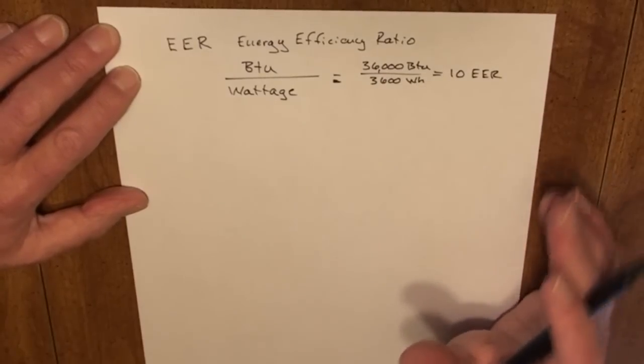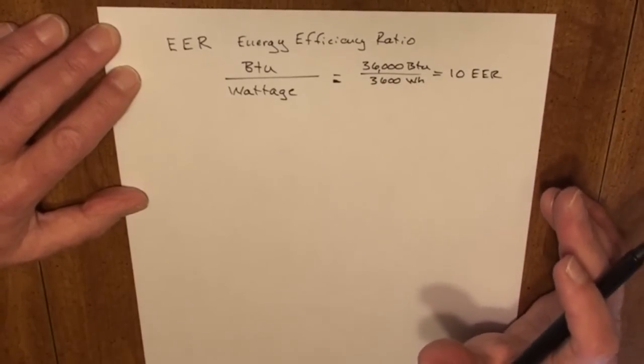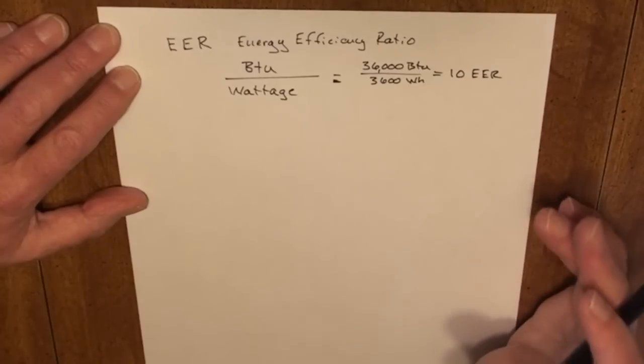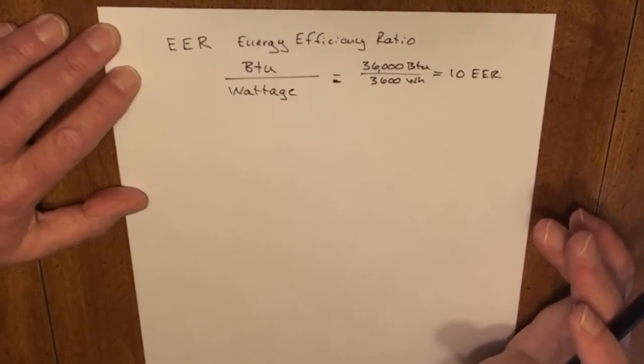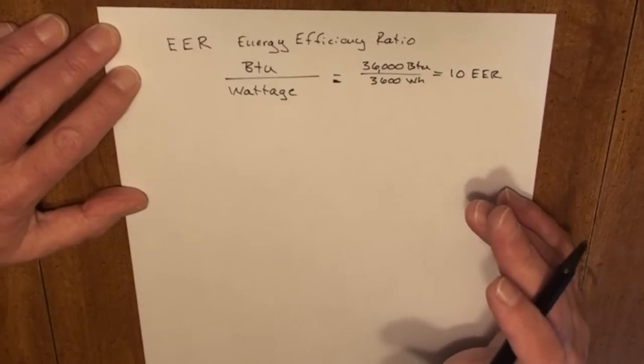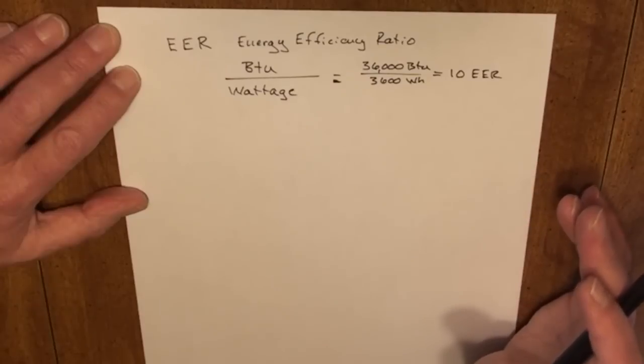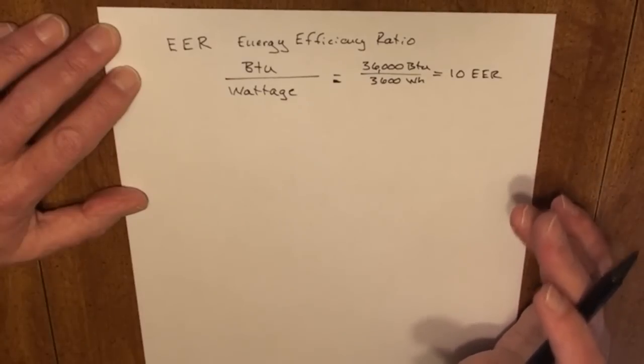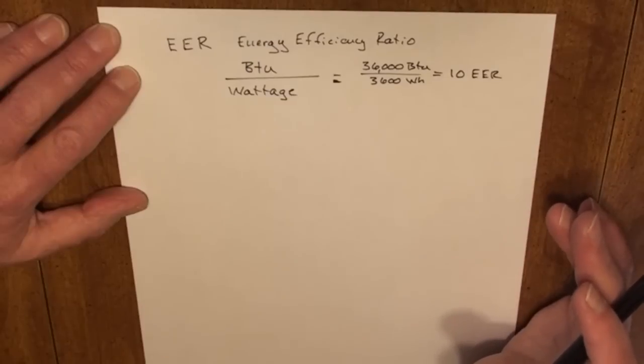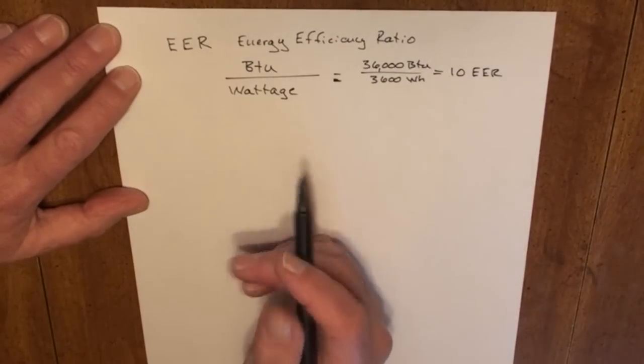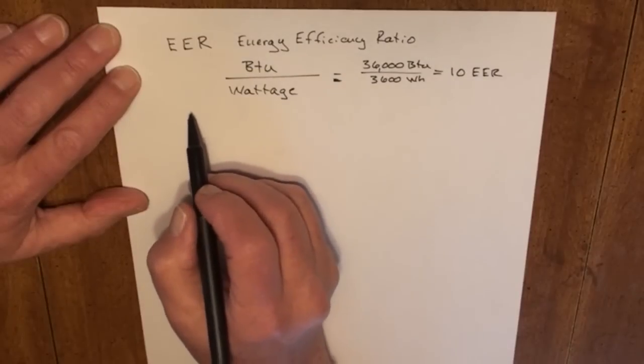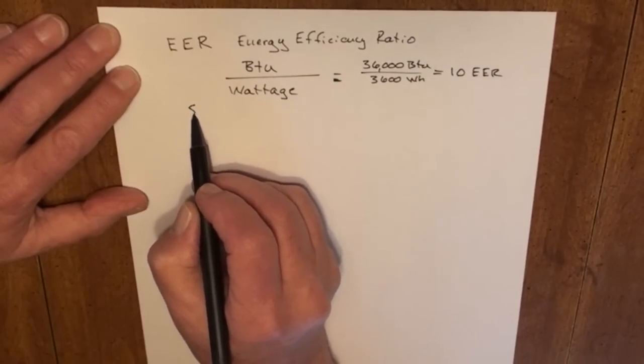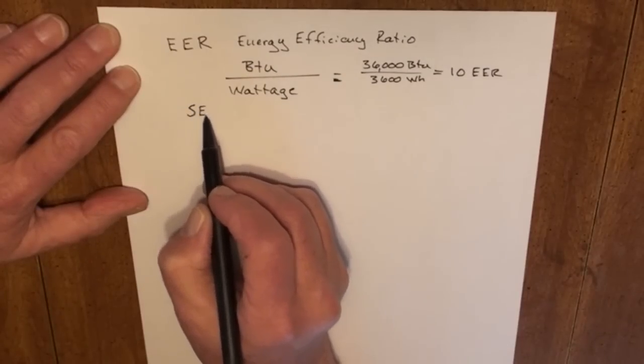This wasn't a very accurate representation of the actual capacity of the unit. They didn't take into account warm days, cool days, spring, and fall. So they came up with a more efficient way of rating the systems, and that was the SEER rating.